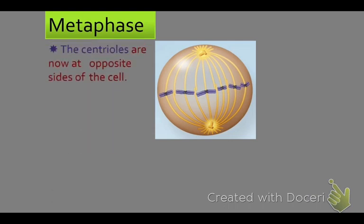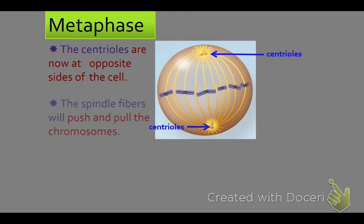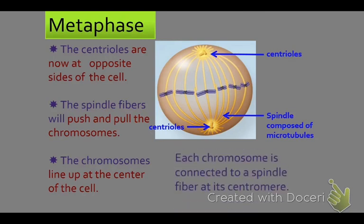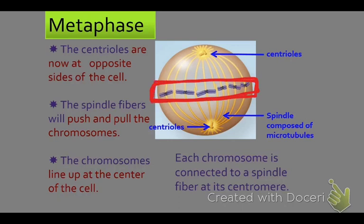In metaphase, the centrioles are now at opposite sides of the cell — north pole, south pole. The spindle fibers push and pull the chromosomes so that they all line up at the center of the cell, and the spindles are attached to each centromere. We see this nice line in metaphase — we call this the metaphasal plate. When you think metaphase, think: all the chromatids are lined up.